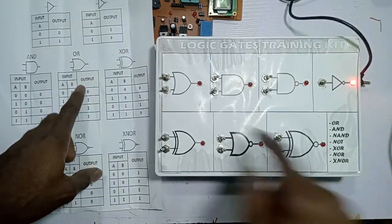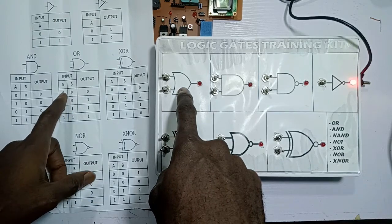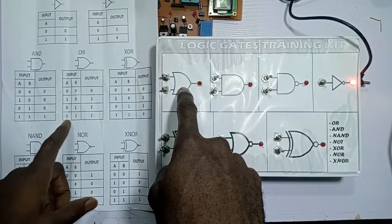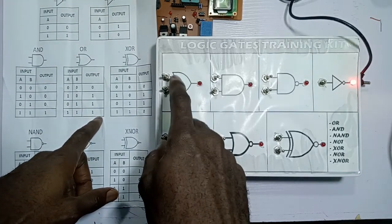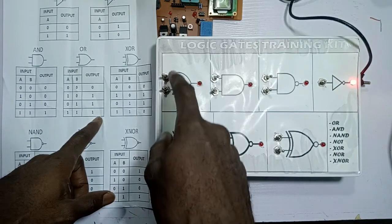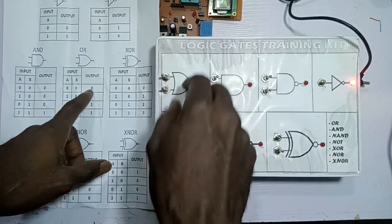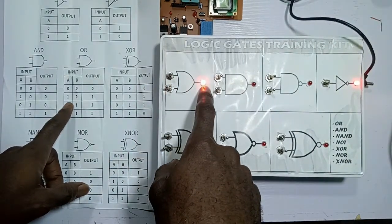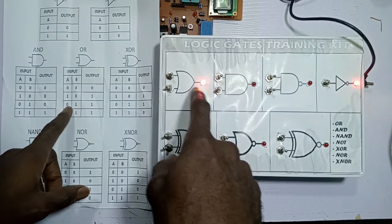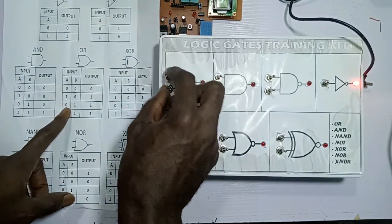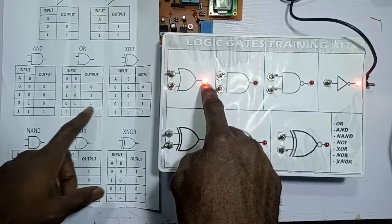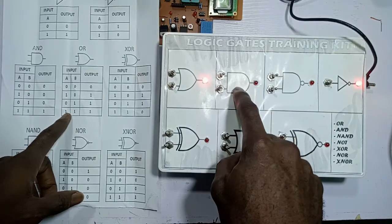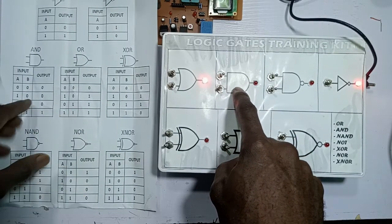For the OR gate, the truth table is: zero zero gives zero, one zero gives one, zero one gives one, and one one gives one. So now I have zero zero here, so the output is zero. If I have one zero — that will be high, which is one. If I have zero one, that will still be one. If I have one one, that will still be one.